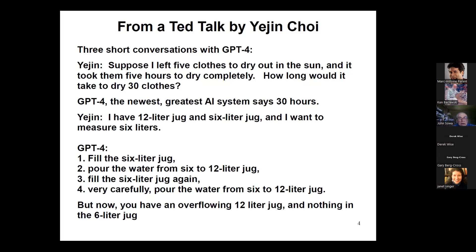I'll start with three short conversations with GPT-4 by Yejin Choi, who discussed this in a TED talk. She started with three short examples. In the first one, she says: suppose I left five clothes to dry out in the sun and it took five hours to dry completely. How long would it take to dry 30 clothes? GPT-4 said 30 hours. That is clearly wrong — if it's five hours for five clothes, it's still going to be five hours.